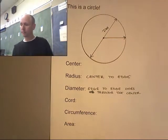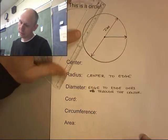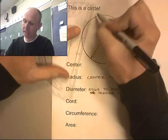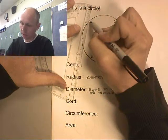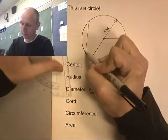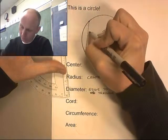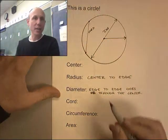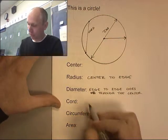A chord is the distance from edge to edge, but it doesn't go through the center. And there are lots and lots of chords on any circle. Actually, they're infinite chords. So here's an example of a chord. Might be a chord. So it's edge to edge, but it does not go through the center.